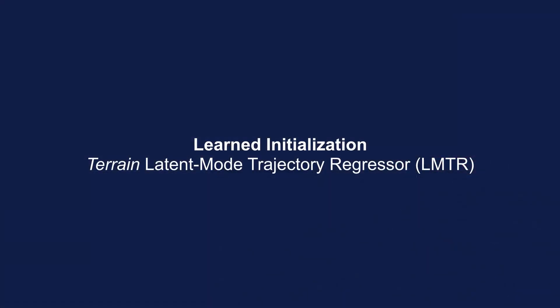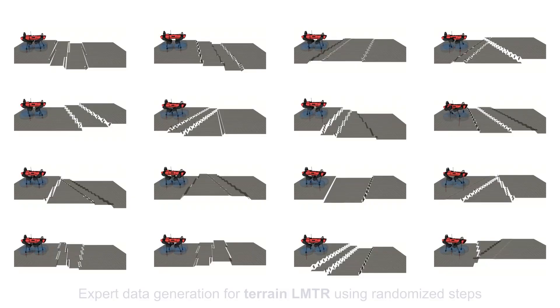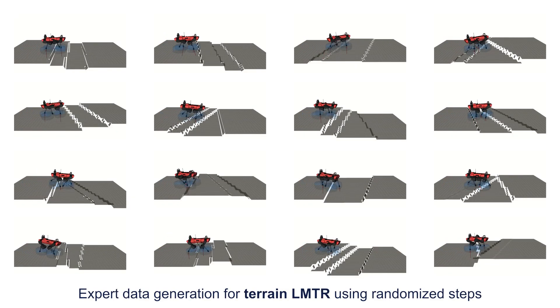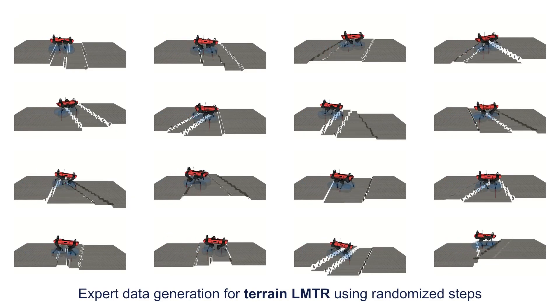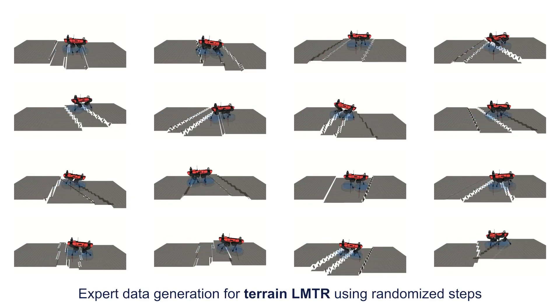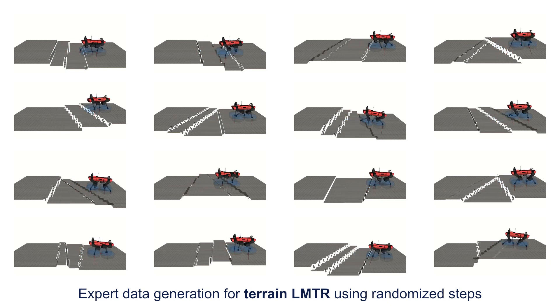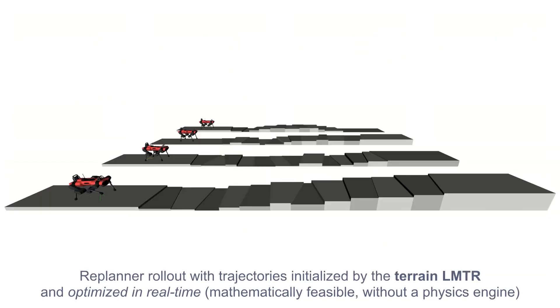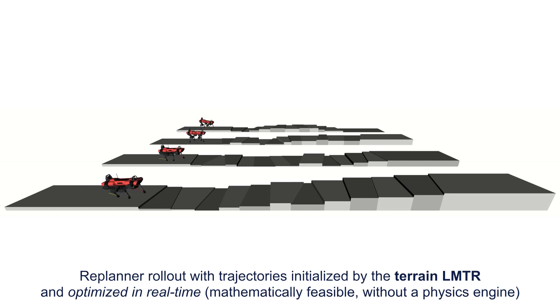We are currently working on a terrain version of the LMTR. We generate expert data of dynamic locomotion on steps of arbitrary depth, height, and orientation. Thus far we have deployed the LMTR on terrain models at re-planning frequencies of 2 to 5 Hz.